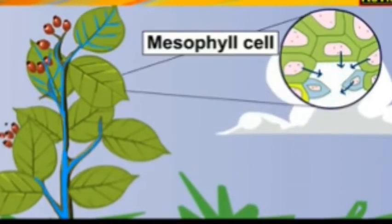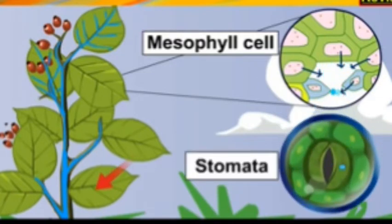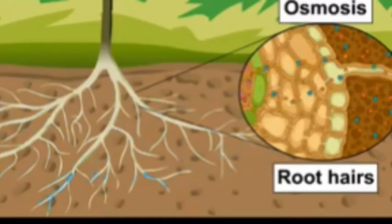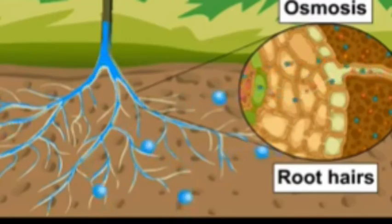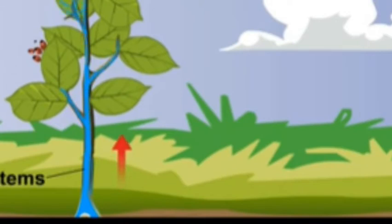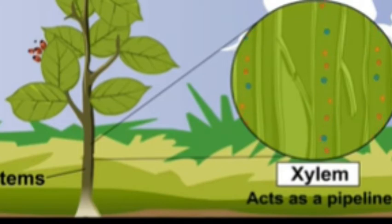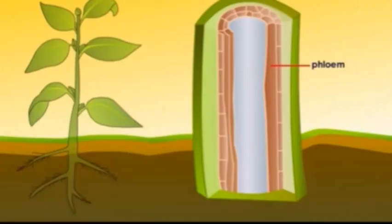We can tell that transpiration, or loss of water as vapor through the stomata on leaves, helps in the absorption of water by plant roots. It means that water is not pushed from roots through stem to leaf, but pulled by transpiration loss.